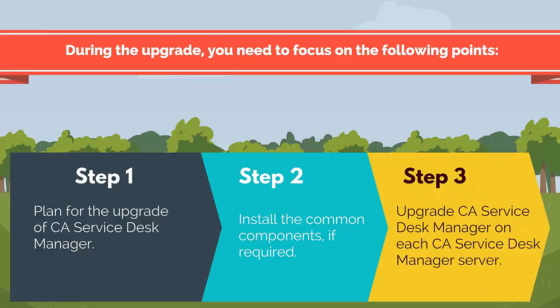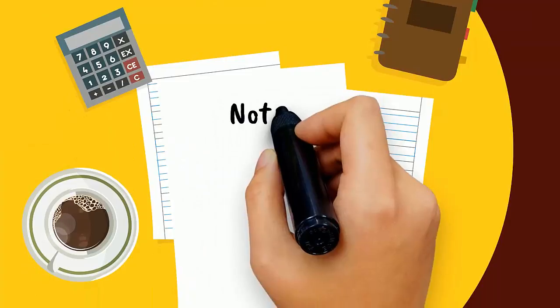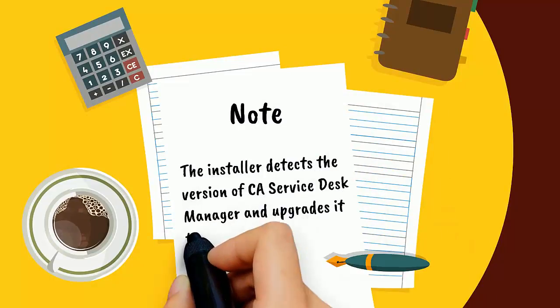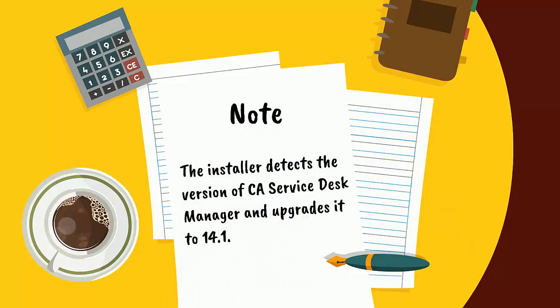Plan for the upgrade of CA Service Desk Manager. Install the common components if required. Alternatively, you can use an existing supported version of these products as listed in the supportability matrix. Upgrade CA Service Desk Manager on each CA Service Desk Manager server. The installer detects the version of CA Service Desk Manager and upgrades it to 14.1.